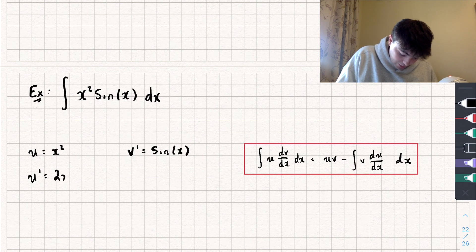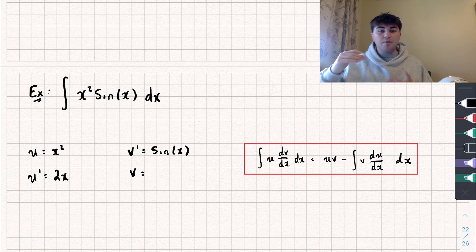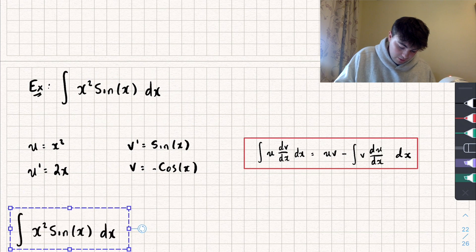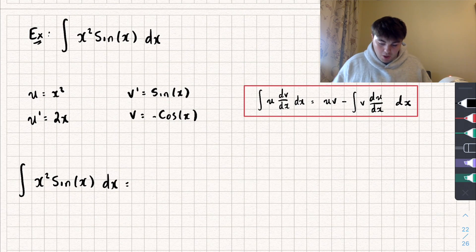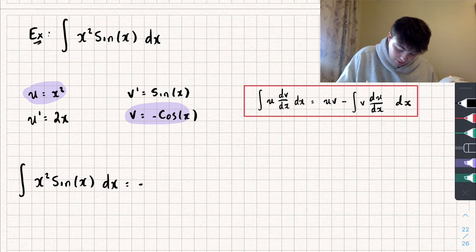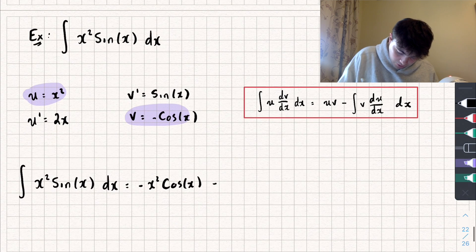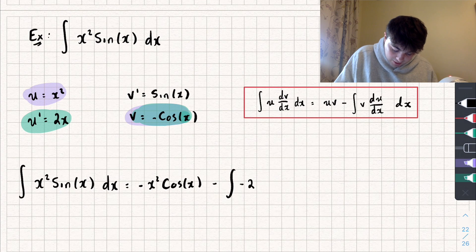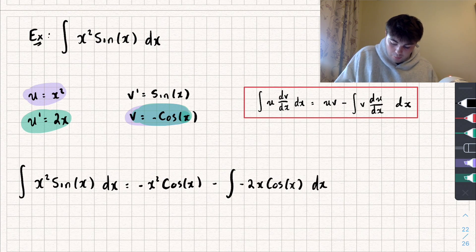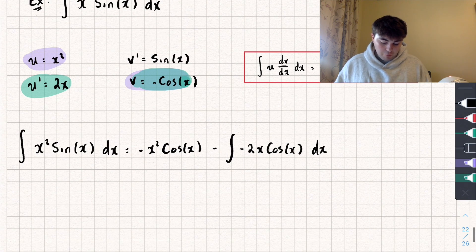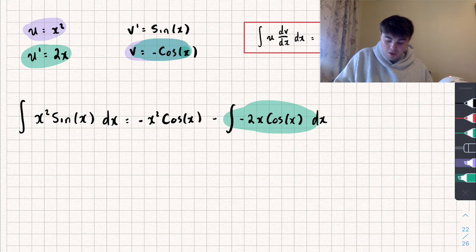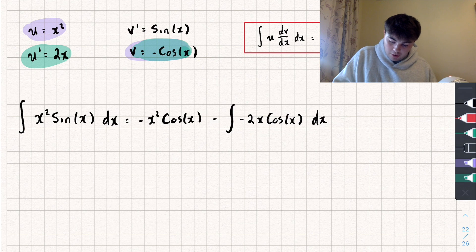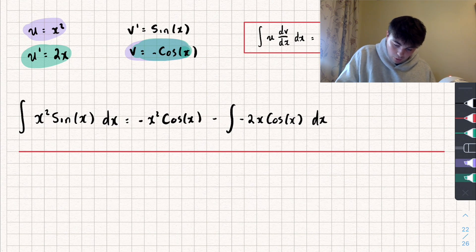Differentiating u gives us 2x, and integrating v' — sine of x integrates to negative cosine of x. Using our integration by parts formula, rewriting this integral gives us uv, which is negative x squared cosine of x, subtract the integral of v times u', which is the integral of negative 2x cosine of x with respect to x. Looking at this remaining integral, to integrate it we're going to have to use integration by parts again.